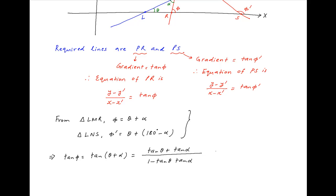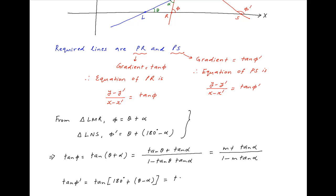Since tan theta equals m, tan phi is equal to m plus tan alpha upon 1 minus m times tan alpha. Taking the tangent of the second equation, we get tan phi-dash is equal to tan(180 degrees plus theta minus alpha), which is equal to tan(theta minus alpha), because tan is periodic with period 180 degrees. Therefore, tan phi-dash is equal to tan theta minus tan alpha divided by 1 plus tan theta times tan alpha.